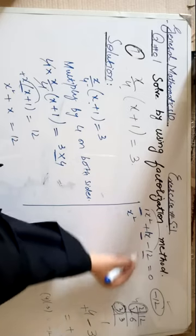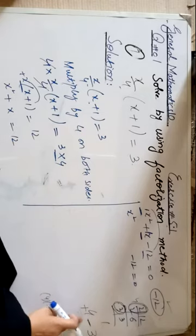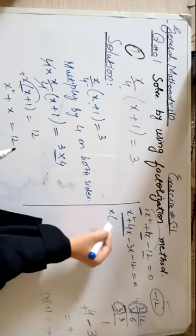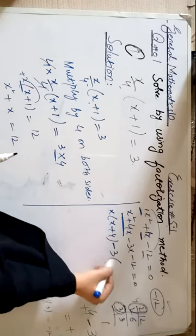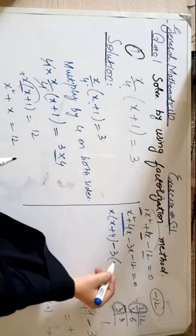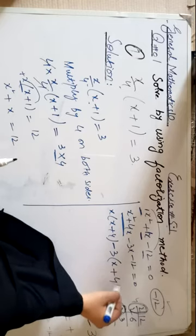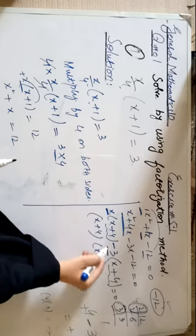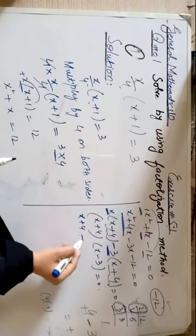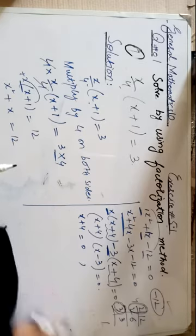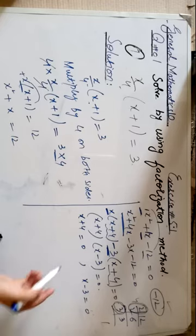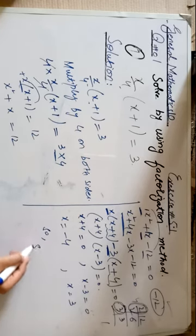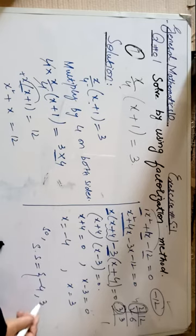Keeping first and last terms as they are: x² - 12 = 0, and breaking the middle term into +4x - 3x. Take x common from first two: x(x + 4). Take -3 common from last two — remember, when taking a negative common, the signs inside change: -3(x + 4). Common factor (x + 4) written once: (x + 4)(x - 3) = 0. Therefore x = -4 and x = 3. Solution set = {-4, 3}.